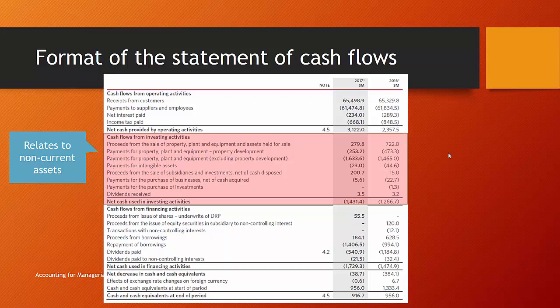The second set of cash flows are investing activities, which relate to non-current assets — primarily purchases and sales of property, plant, equipment, and intangible assets. Woolworths has $1.6 billion in capital expenditure, another $250 million in property development, and sold off assets generating about $300 million in cash. Net cash used in investing activities is approximately $1.4 billion overall.